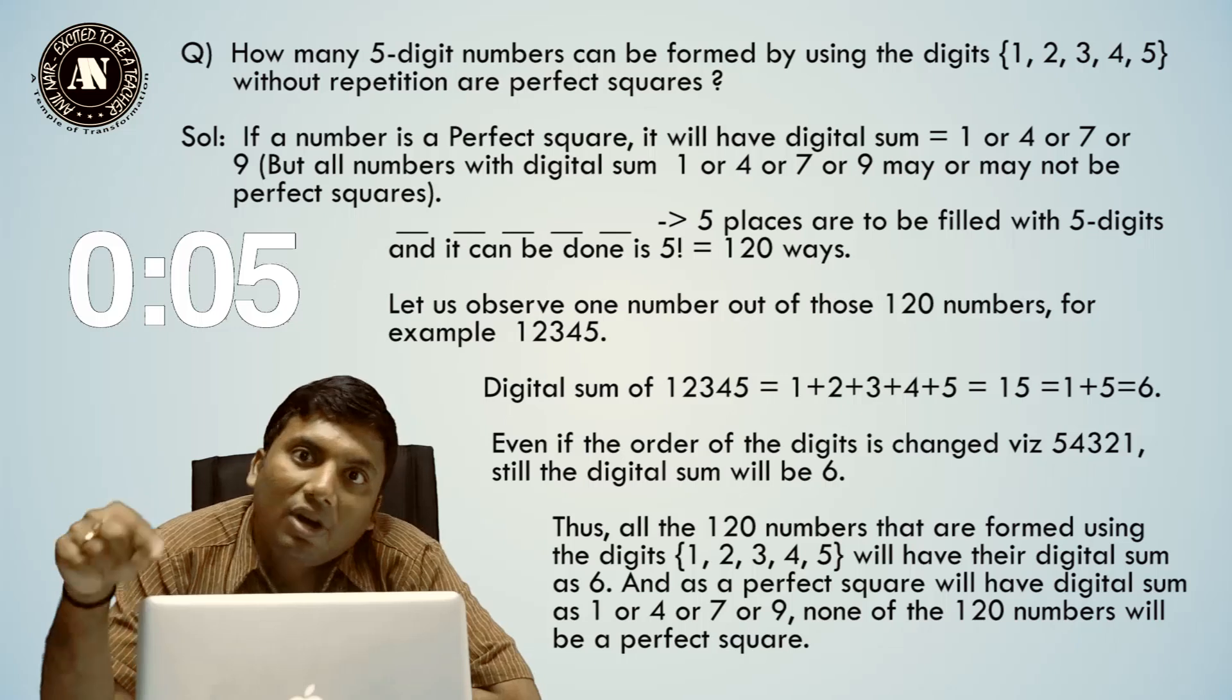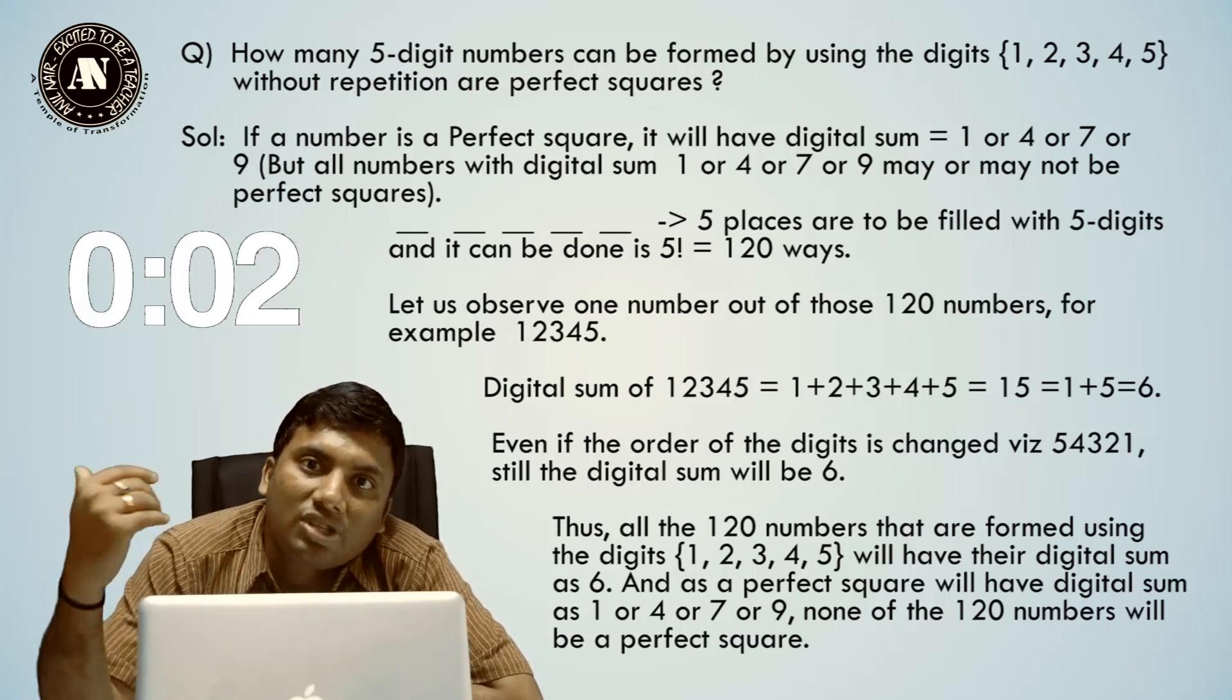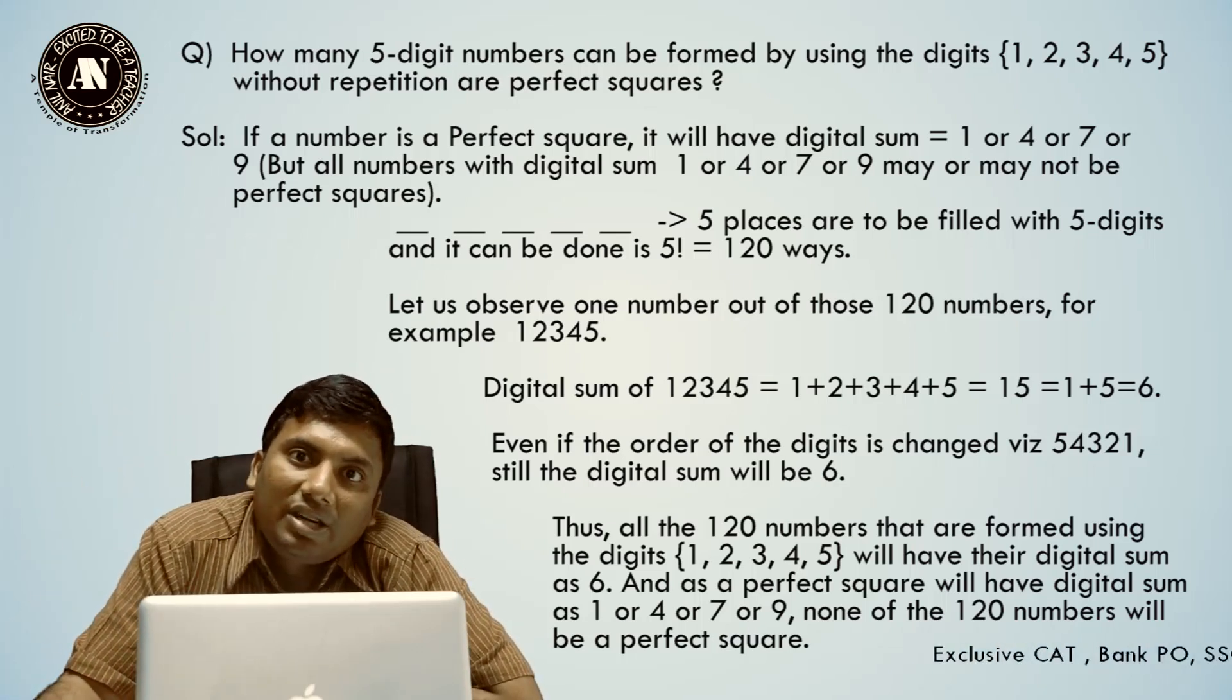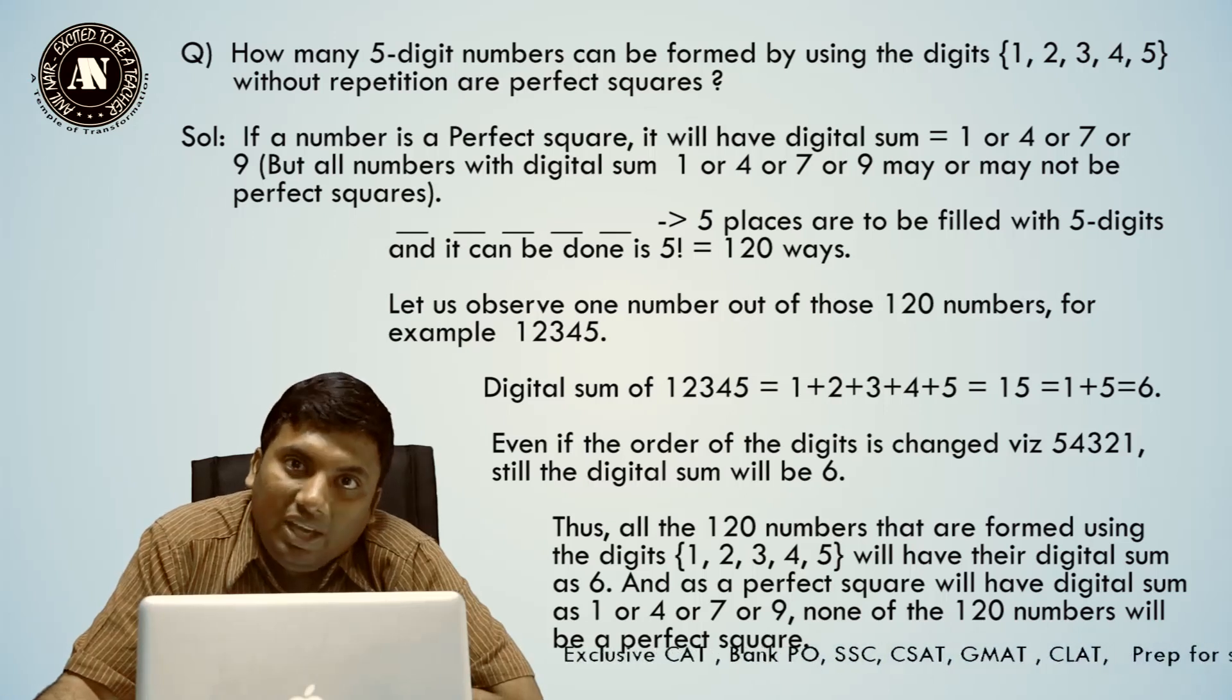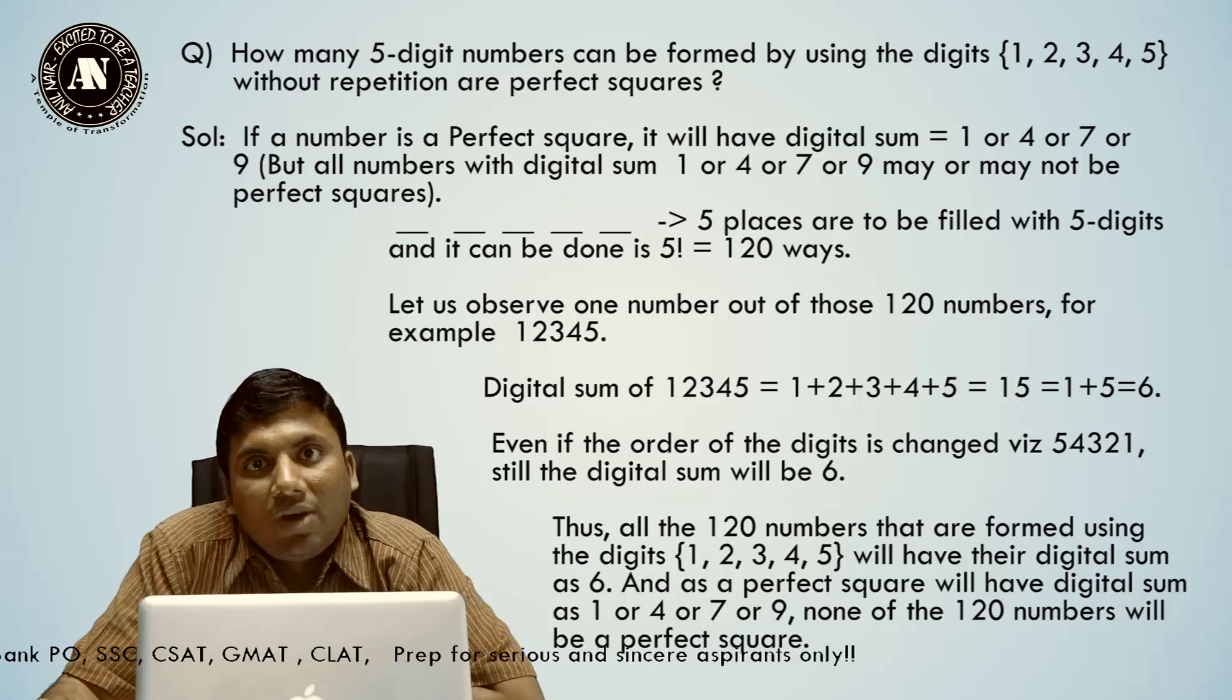If it has 1, 4, 7, or 9 then it is a perfect square. Because it has digital sum 6, it is not a perfect square. This is how you should solve some of the P&C questions. For example, how many five-digit numbers with digital sum 3 are perfect squares?